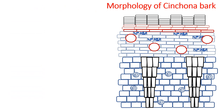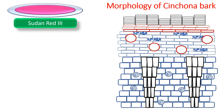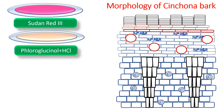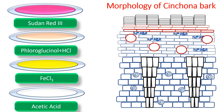Next is about the staining of Cinchona bark. You can use different stains: Sudan red 3, chloroglucinal HCl, FeCl3, and acetic acid. If you stain thin sections of Cinchona bark with Sudan red 3 — since it is an oil-soluble dye — only the cork cells at the periphery will take up the dye and stain pinkish or reddish in color.